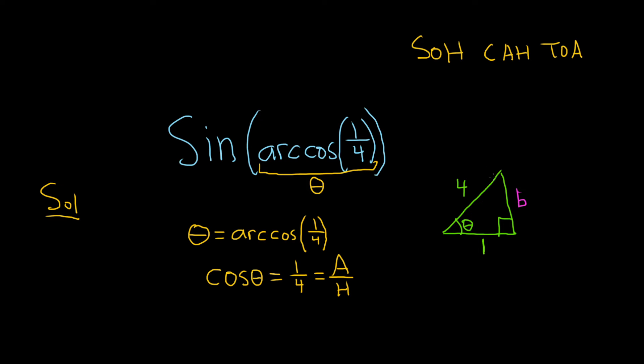And so now we can use an ancient theorem, the Pythagorean theorem, to find b. It says that 1 squared plus b squared is equal to the hypotenuse squared. So 4 squared. So that means that 1 plus b squared is equal to 16.